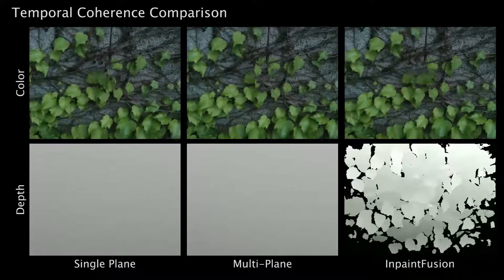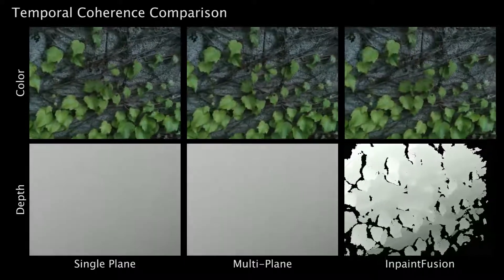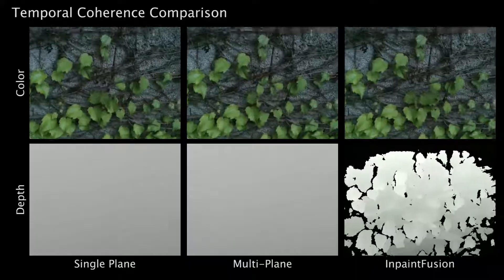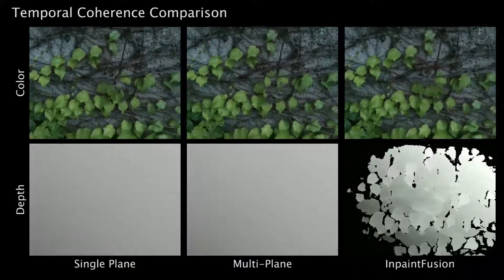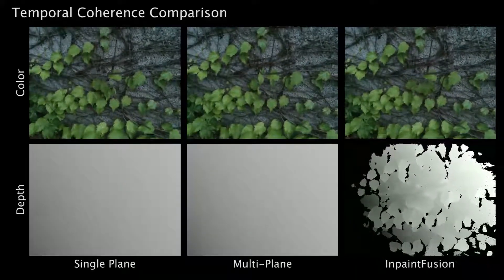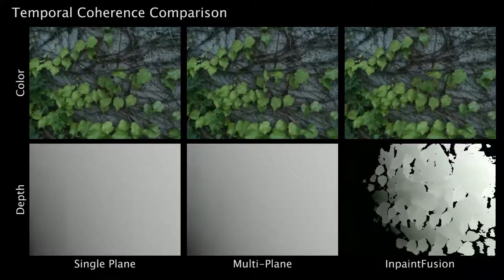In this scene, it is probably difficult to see the differences in color results, but it is quite obvious that our method generates plausible depth maps, and the other methods fairly eliminate the details of the leaves.